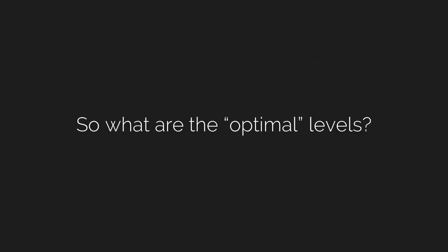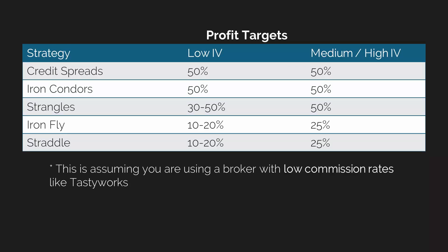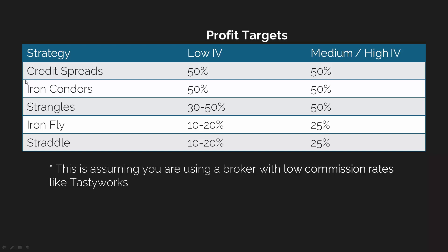So what are these optimal levels? I'm not reinventing the wheel here — TastyTrade has done a ton of research on this, and I'll link some of those slides in the description below. Here are the key nuggets for beginning options traders. The most common strategies are on the left side of the slide. For credit spreads and iron condors, these are your wider profit targets. A credit spread looks like this, and if you make the same on the other side you've got an iron condor — a short and a long call or put on each side.